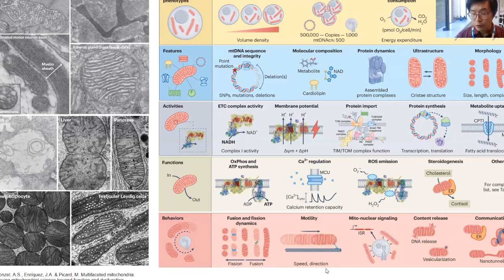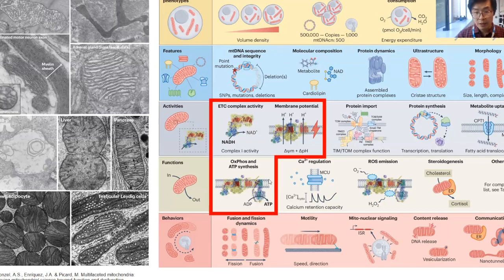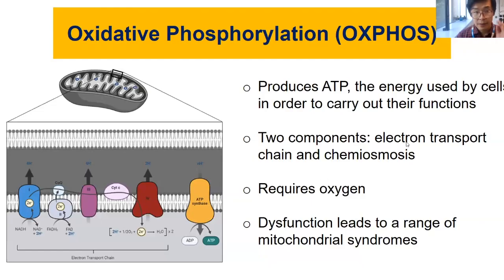Mitochondria don't just float inside the cell — they are capable of moving in different directions. They undergo fission, where they split to produce more mitochondria when greater energy is required, or fusion, where different mitochondria join together to form one longer structure. They also have important roles communicating between mitochondria and with other organelles within the cell.